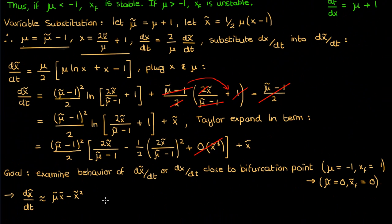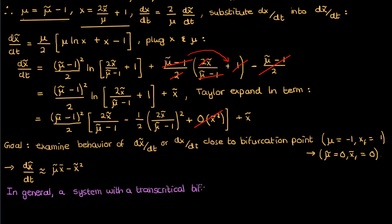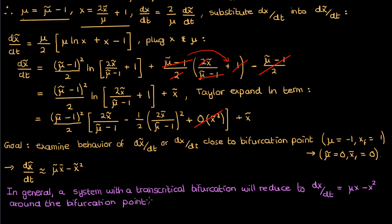Therefore, the fixed point xf equals one undergoes a transcritical bifurcation at μ equals negative one in this dynamical system. In general, if you take a complicated system with a transcritical bifurcation and examine its behavior around the bifurcation point with the proper change of variables, you'll find the equation reduces to the normal form dx/dt equals μx minus x². For the next lesson, get your pitchforks ready because we're going to talk about pitchfork bifurcations.